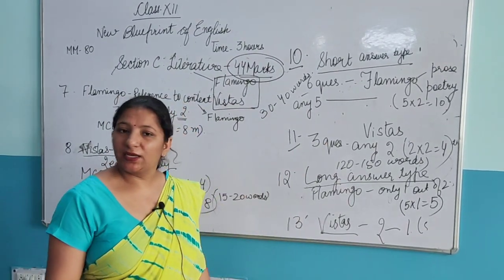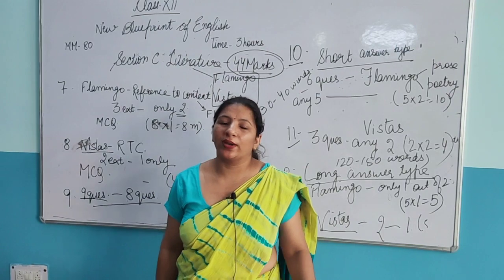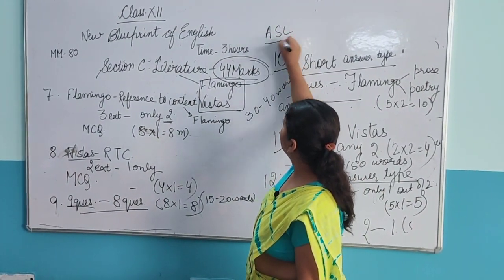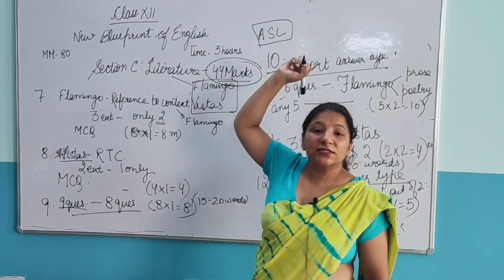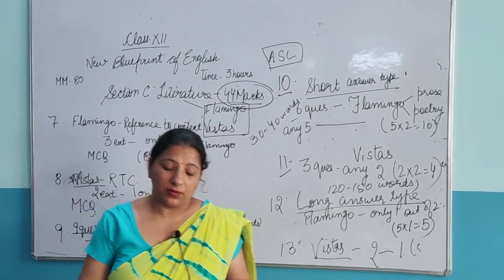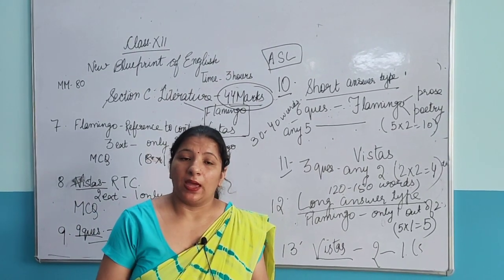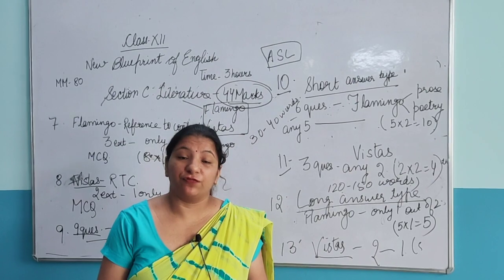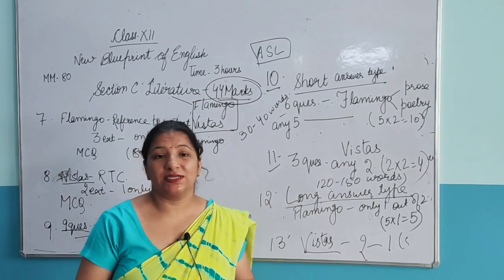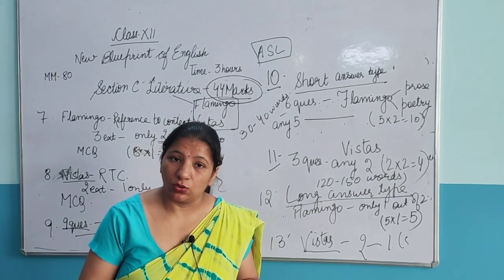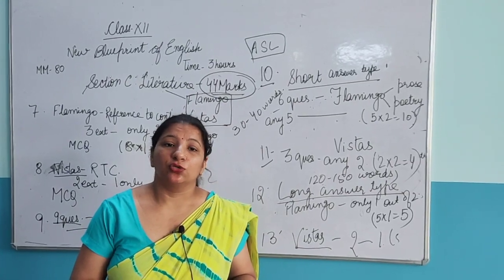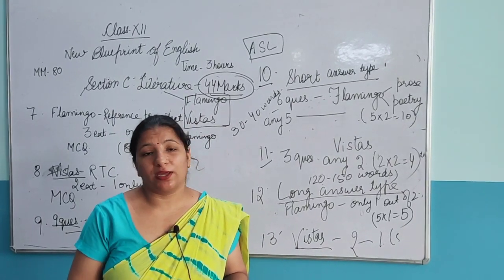This completes our 80 marks. What about the remaining 20 marks? That is ASL — Assessment of Speaking and Listening Skills. We hope that schools are going to open very soon. If they are not, we will tell you how ASL will be assessed. Online ASL can also be taken, and we will inform you from time to time about what is to be done.